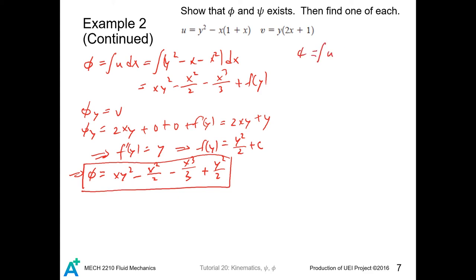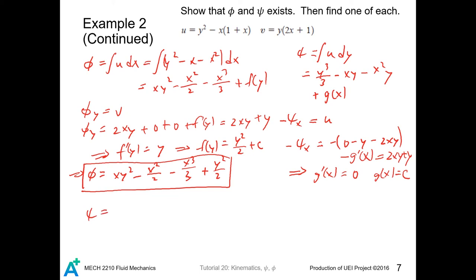Then we repeat the procedure for psi. And here the constant is a function in x. We require negative of psi_x is u, but negative of psi_x is, so one choice of psi is...